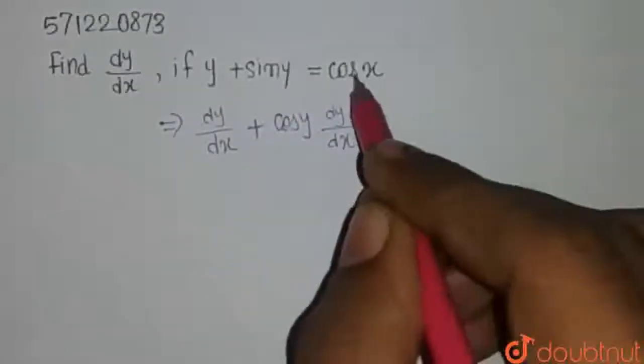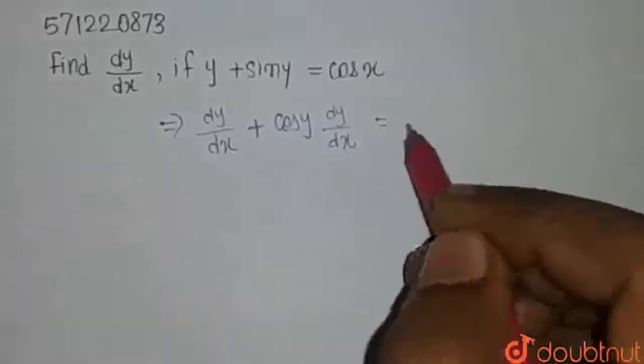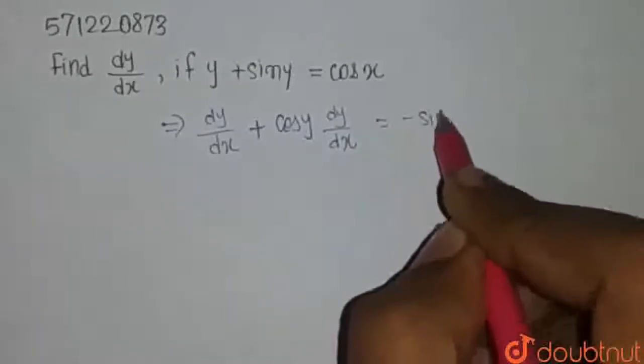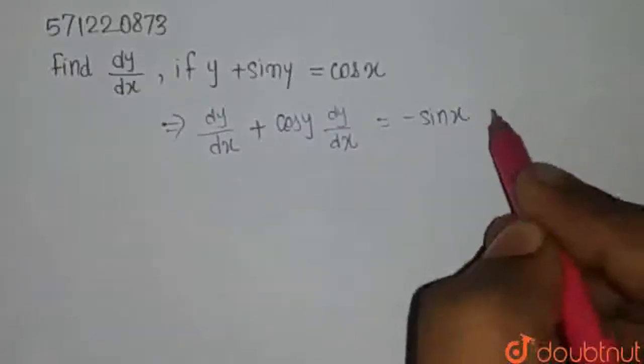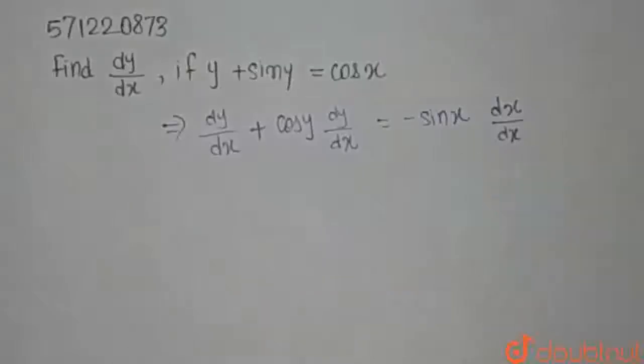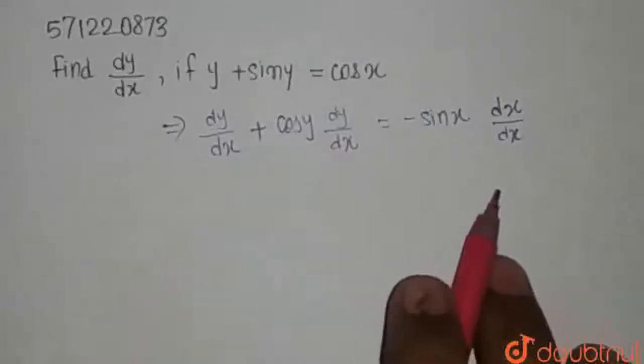The second side cos x. We have to differentiate this with respect to x. So, cos x differentiation is minus sin x. And differentiation of x with respect to x. So, it is the whole differentiation part we have got.